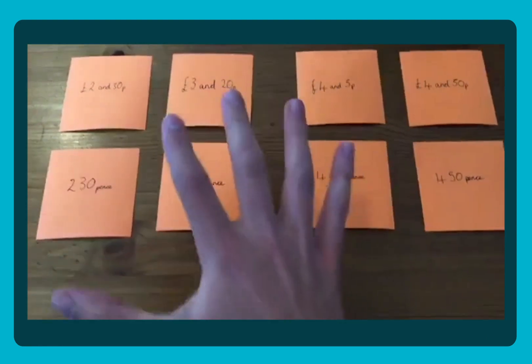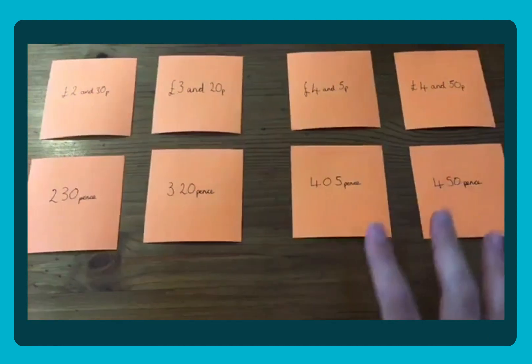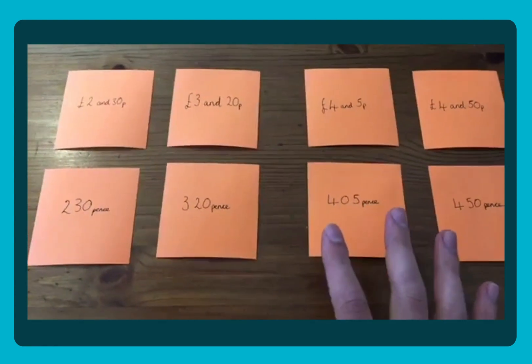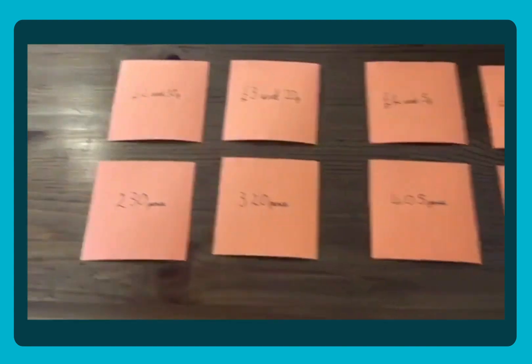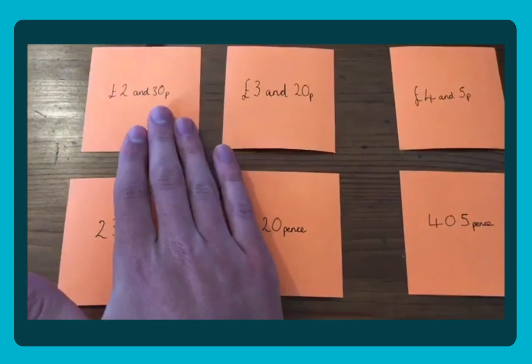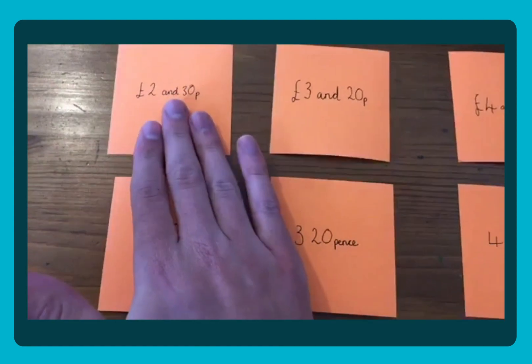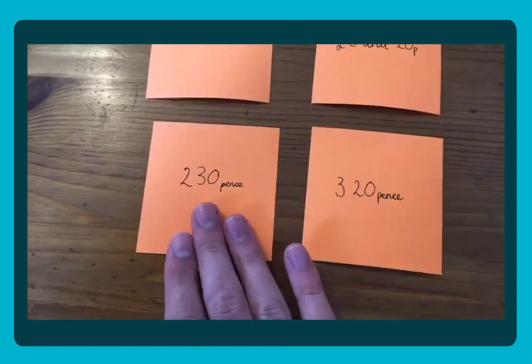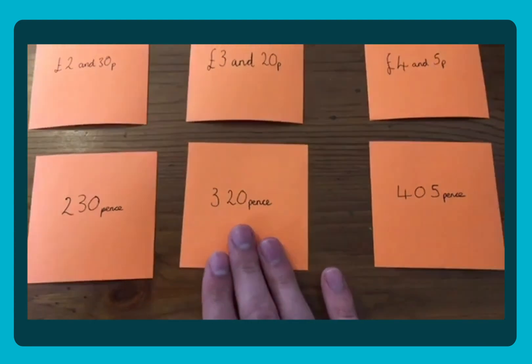So the first one is based on a classic memory game. You'll need yourself a set of cards. I've just got some sticky notes here because they're equally sized, which is nice when you turn them over. On each set you want pounds and pence and a linked pence amount. So £2.30 is the same as 230 pence, £3.20 is the same as 320 pence.